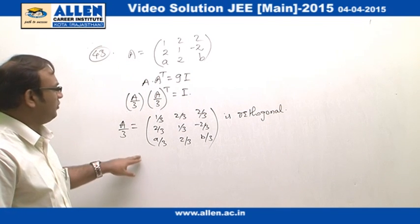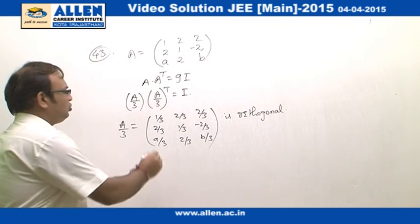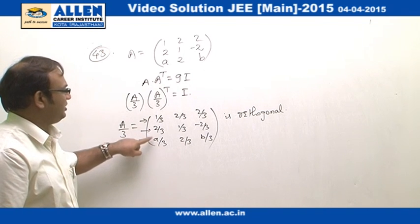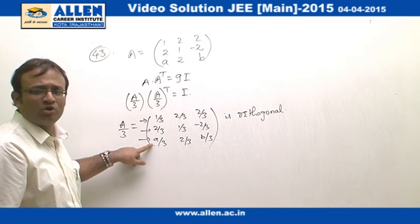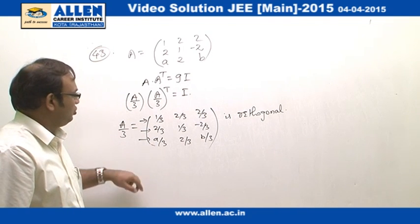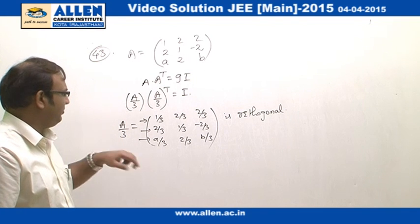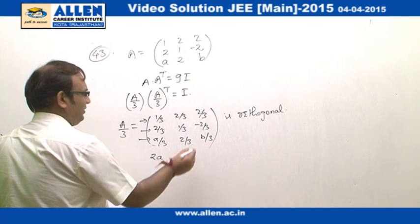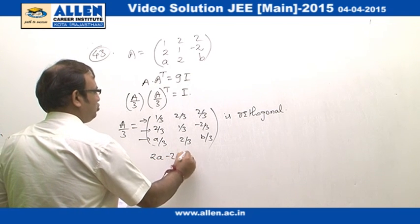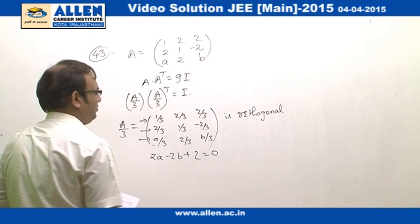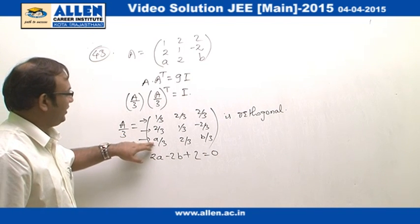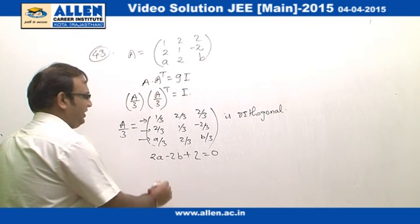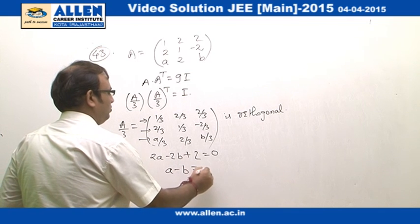Now we know that in case of orthogonal matrix, each row represents a unit vector and the three vectors represent the triad of orthogonal vectors which are unit vectors. So we can generate the relations for A and B. If we take the dot product for this, we will have 2A minus 2B plus 2 equal to 0. That makes it A minus B equal to minus 1.